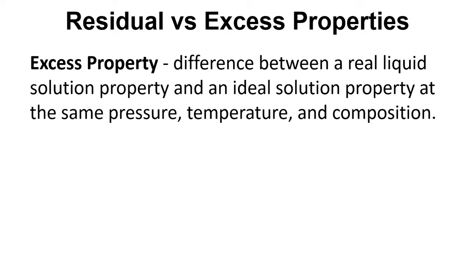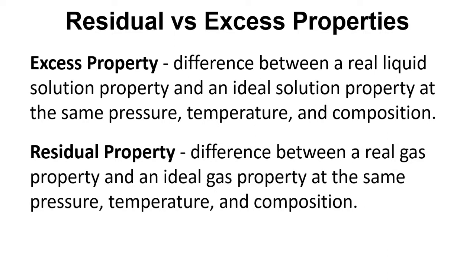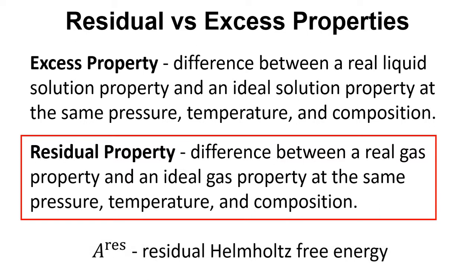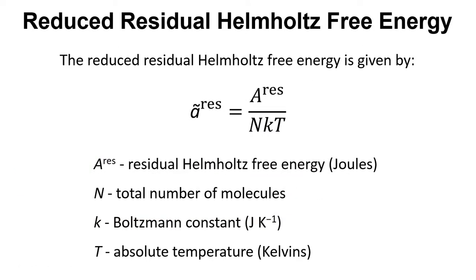We need to think about residual versus excess properties. Excess properties are associated with the difference between a real liquid solution property and an ideal solution property at the same pressure, temperature, and composition. Whereas a residual property is the difference between a real gas property and an ideal gas property at the same temperature, pressure, and composition. It's the residual property that we're interested in for SAFT theory — denoted as A superscript res. Bringing these together, we have the reduced residual Helmholtz free energy, written as A-tilde superscript res, calculated as the residual Helmholtz free energy A-res divided by nkT.